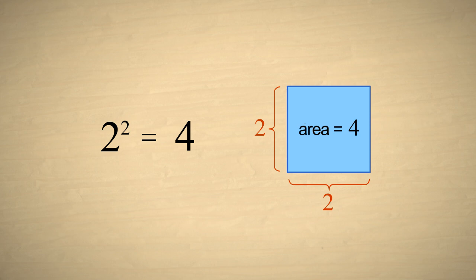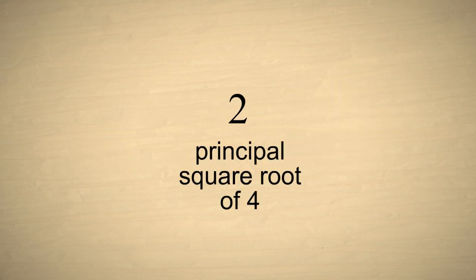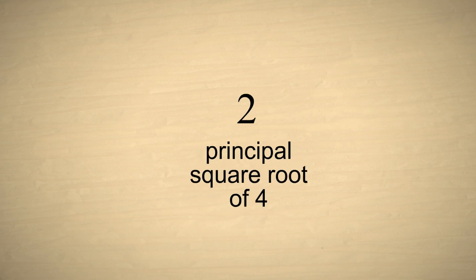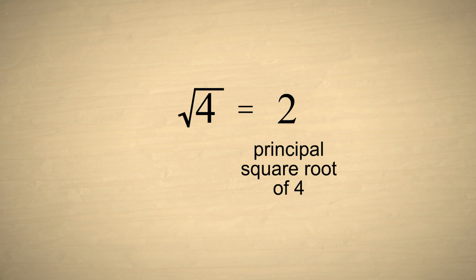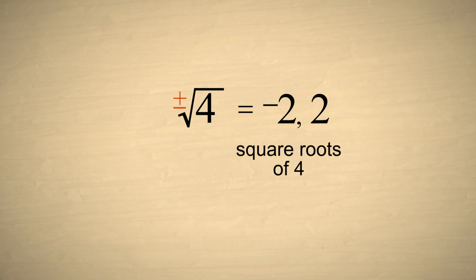But two is not the only square root of four. Negative two is the square root of four as well, since squaring negative two also gives us four. So four has two square roots, two and negative two. However, a length can't be a negative number. Therefore, we call the positive root the principal square root. We indicate the principal square root of four by writing four under a radical sign. If we want to indicate the negative square root, we place a negative sign in front of the radical, indicating the negative of the principal square root. And if we wish to indicate both square roots, we place a plus-minus sign in front of the radical.